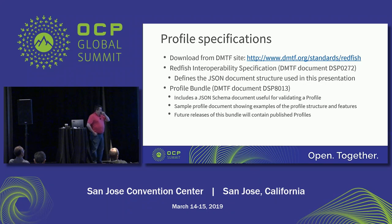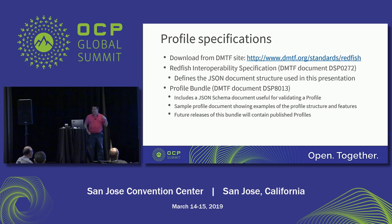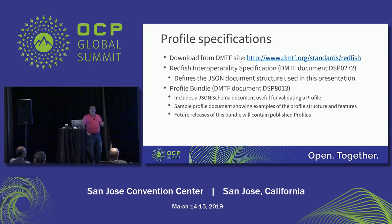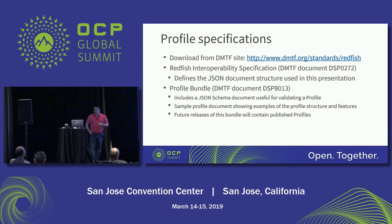There are two pieces from the DMTF backing all of this. First is the profile specification, document DSP0272, which describes the JSON document — available from the DMTF site. The other download is a bundle called DSP8013, a zip file that has the schema describing the profile, the same document, and a sample profile. In the future, any published profile produced by the DMTF or received for republication will be placed in that bundle, so all the profiles we know about will be in one place.